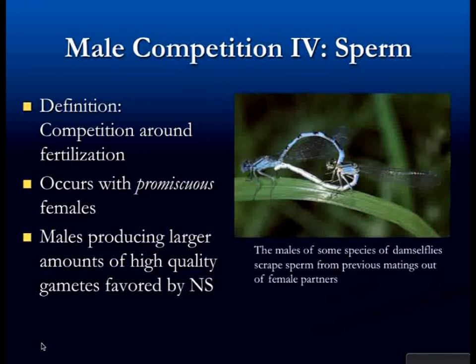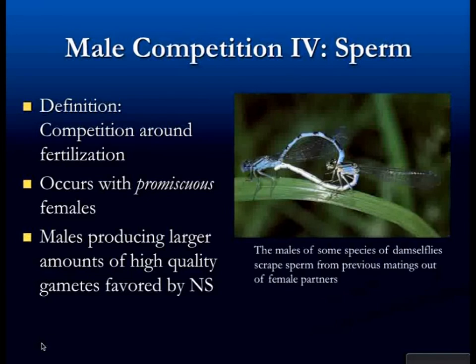For damselflies, males have a sex organ actually shaped like a shovel. When they have sex with a female and ejaculate, they use their shovel-shaped sex organ to remove the sperm of the previous male. Male birds will plug a female to prevent her from having sex with another male. It's crazy what goes on in nature.